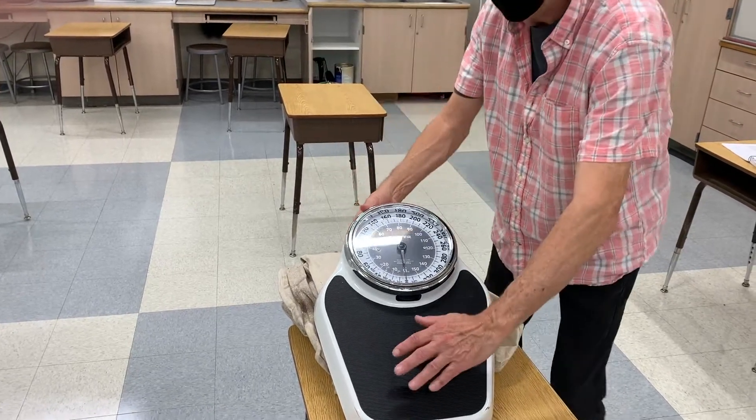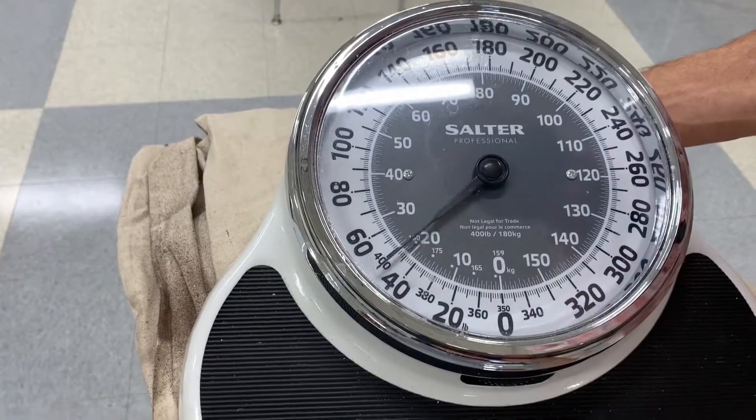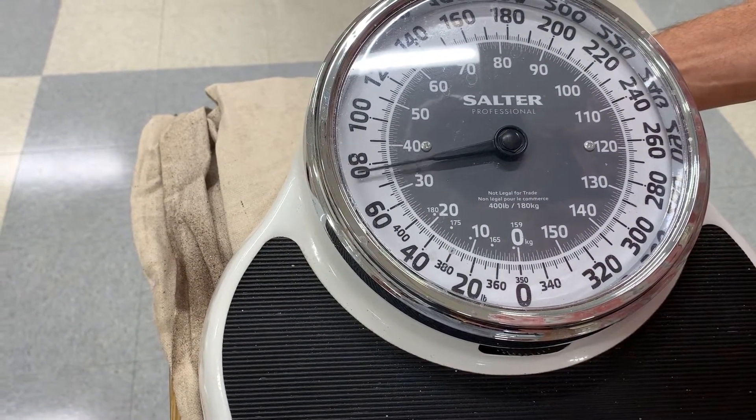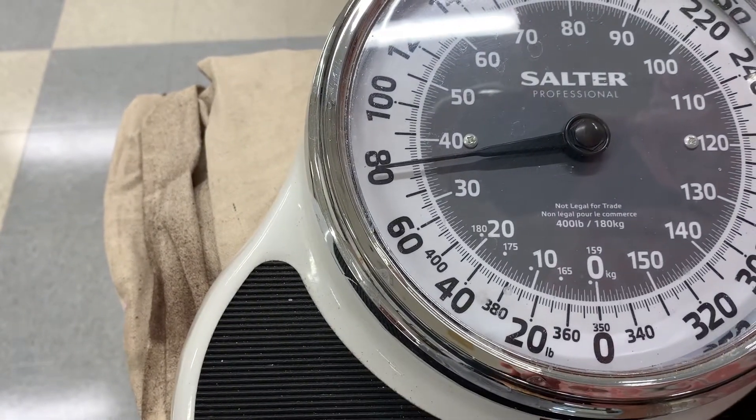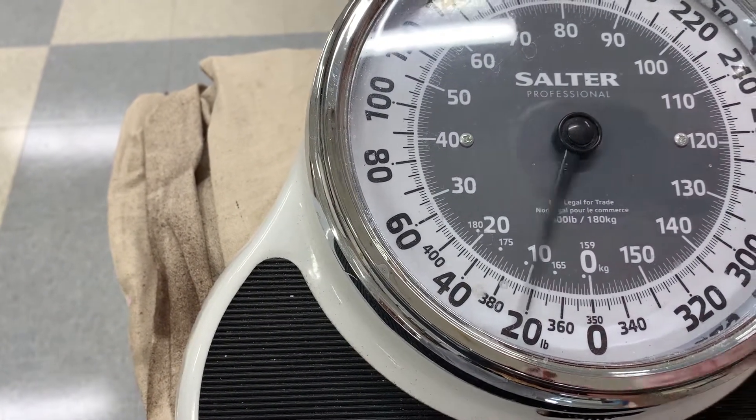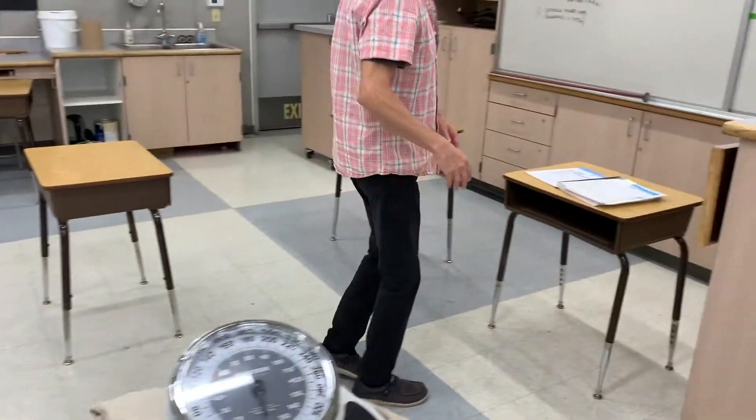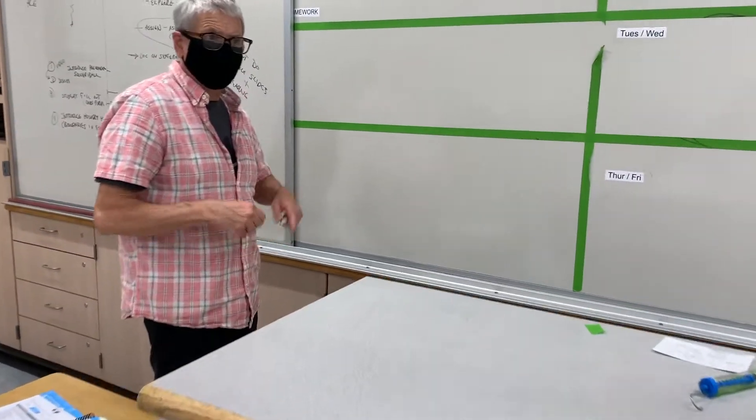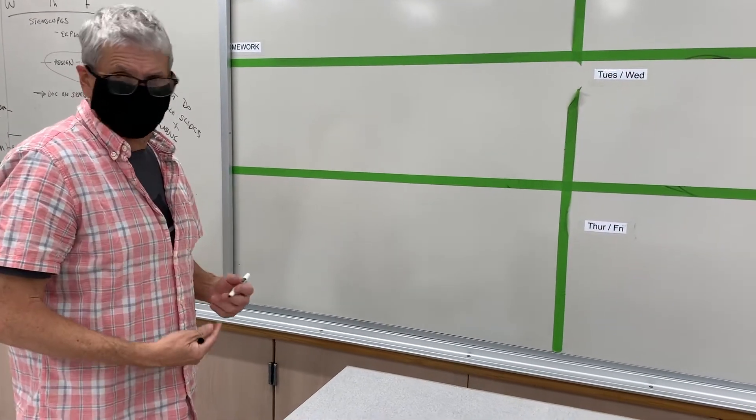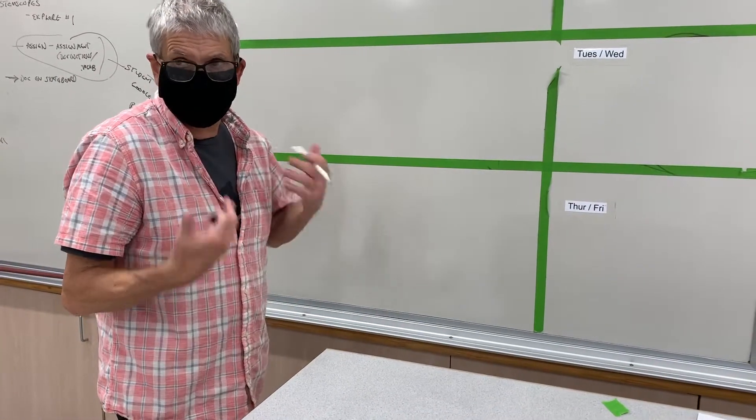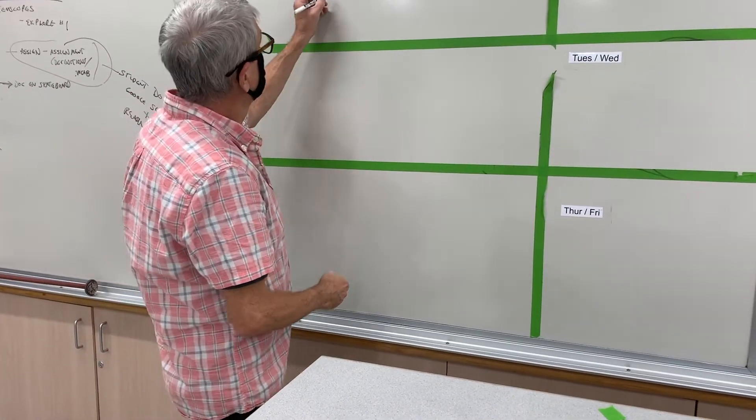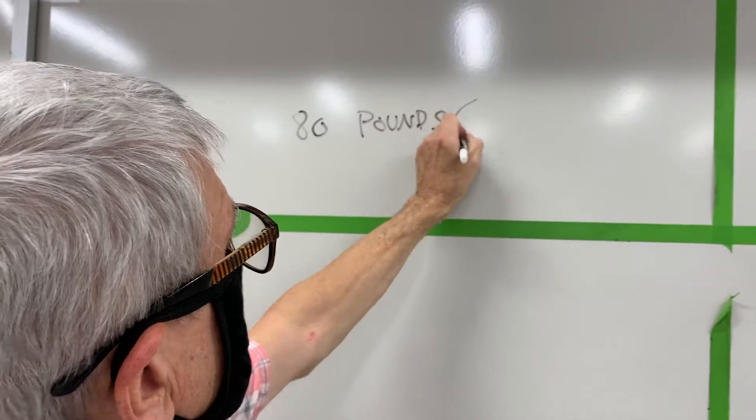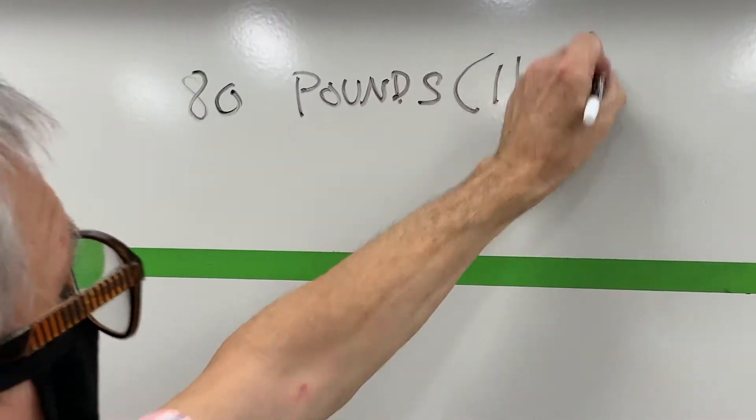I'm going to press down on this and watch what happens. If I apply a force here, tell me what the reading is. Okay, so what I'm going to do is write down what I saw on that scale. It's measured in pounds—that's what the United States uses for its measurement system. So I'm just going to write down 80 pounds, and we can abbreviate that with lbs.